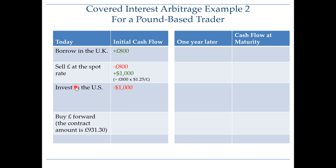The only difference is at the end. When you receive your proceeds from your US investment — $1,071, which you know upfront because you're investing in default-free securities — you are going to convert the entire amount. If you convert those dollars into pounds at the agreed-upon forward rate of $1.15, you get a certain amount of pounds. The forward contract amount is different from the previous case, as you agree to buy pounds in one year at the price of $1.15.